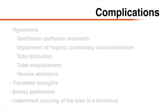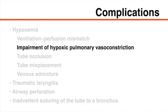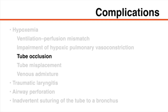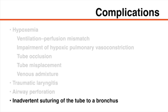Major complications of double lumen endotracheal tube placement include hypoxemia from ventilation-perfusion mismatch, impairment of hypoxic pulmonary vasoconstriction, tube occlusion, tube misplacement, and venous admixture, traumatic laryngitis, airway perforation due to trauma during tube placement or necrosis due to overinflation of the bronchial cuff, and inadvertent suturing of the tube to a bronchus.